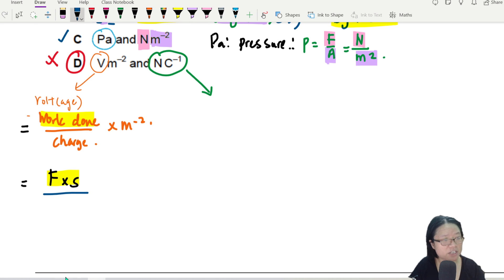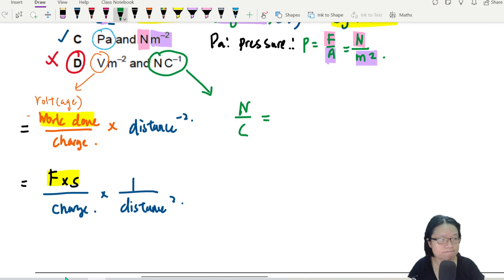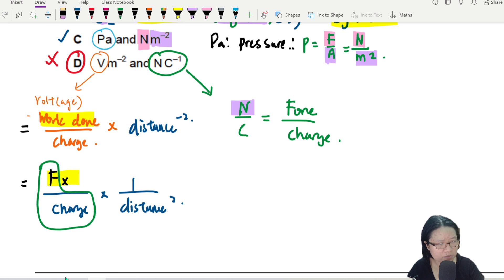But good news. You see the Newton and Coulomb here? So I will work on both sides at the same time to prove that they are not the same. In this case, when you think about work done, you should also consider something like force times distance. So this one is force times distance divide by charge times meter negative 2.